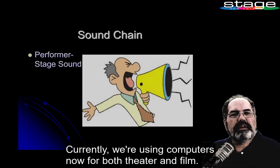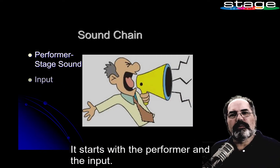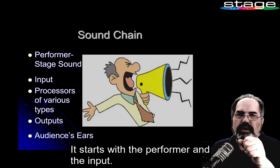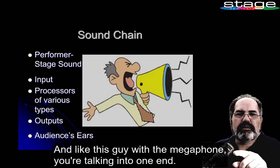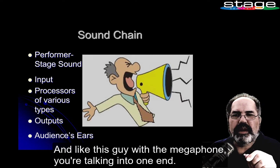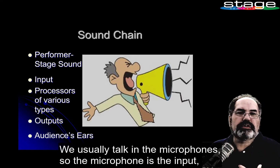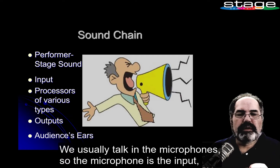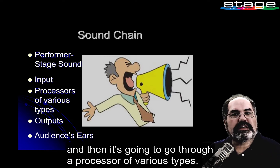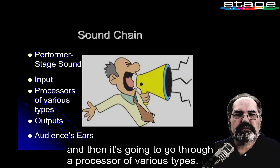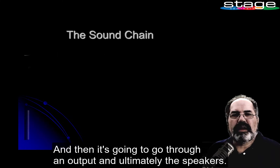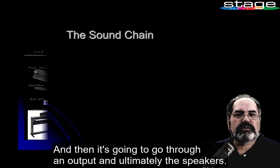For both theater and film, it starts with a performer — the input. They're talking, like this guy with the microphone — you're talking into one end. The microphone is the input, and then it goes through a processor of various types: it could be just the mixing board, EQs, and other things. Then it goes through an output and ultimately the speakers.